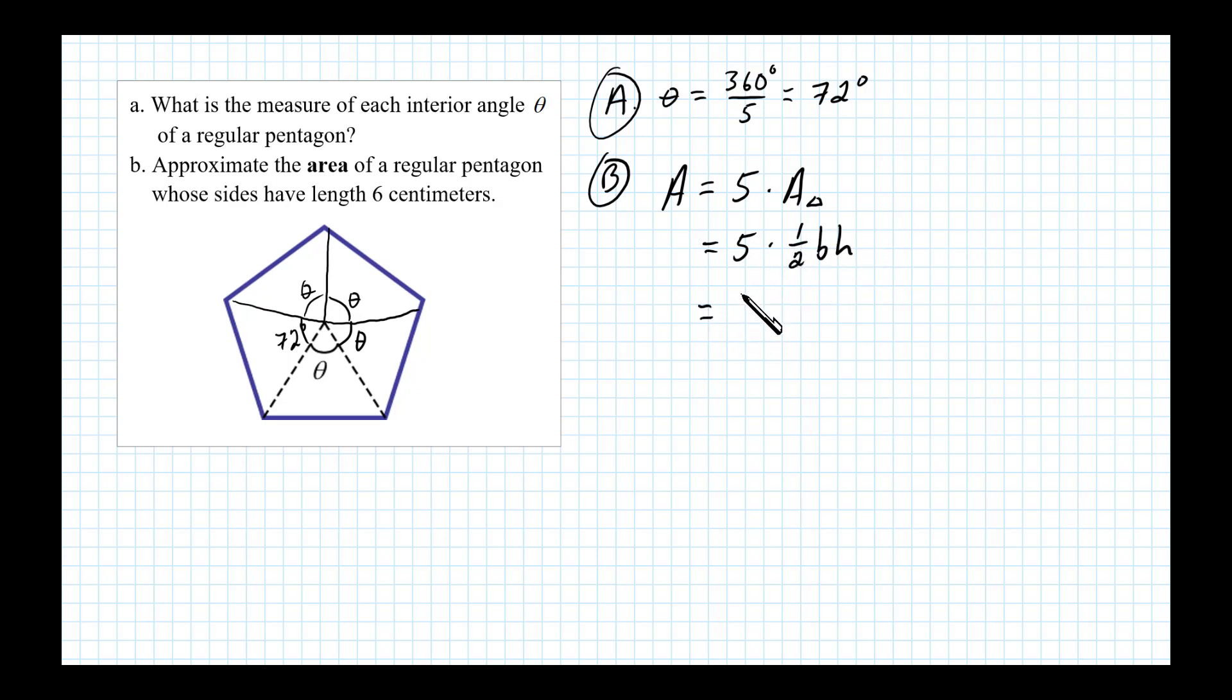Now each side measures six centimeters. So if I look at this triangle here, the area is going to be one half base times height. So we have five times one half, and we can see here the base of the triangle is six centimeters, but we don't know what the height of that triangle is.